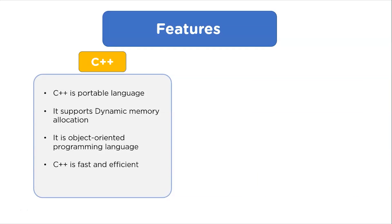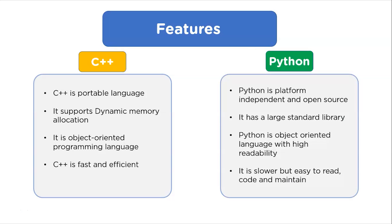Now let's compare the features of C++ and Python. C++ is a portable language — the same piece of code can be used in different environments. Python is platform-independent and open source. C++ allows dynamic memory allocation. Python has a large standard library so we don't have to write code for every single part. Both are object-oriented languages. C++ is fast and efficient, while Python is slower but easier to read and maintain.